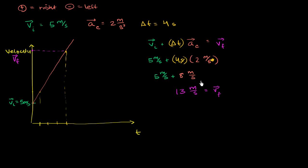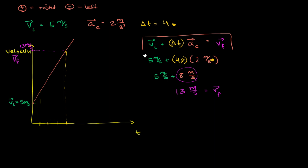I want to take a pause here — this should be intuitive. We were starting at 5 meters per second. Every second that goes by, we go 2 meters per second faster. So after 1 second, we'll be at 7 meters per second. After 2 seconds, we'll be at 9 meters per second. After 3 seconds, we'll be at 11 meters per second. And after 4 seconds, we'll be at 13 meters per second. So you multiply how much time passed times the acceleration — this is how much faster we're going. 5 plus 8 is 13 meters per second. This formula is not something that randomly popped out of the air; it just makes complete common sense.